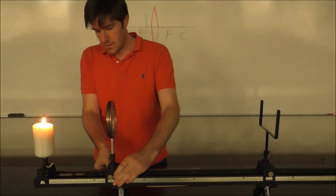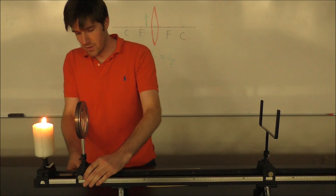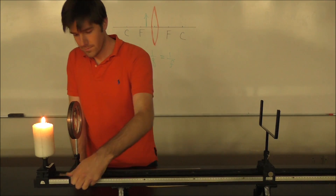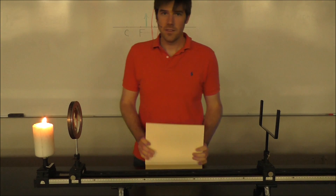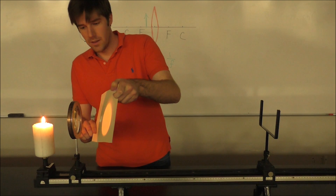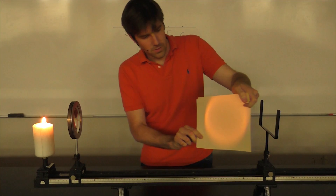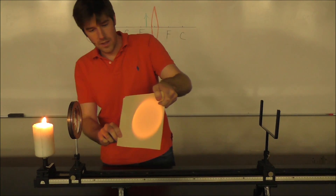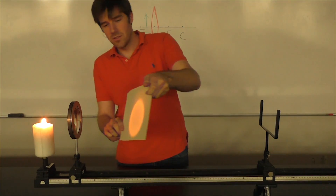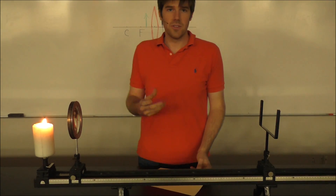I'm going to position the lens right around here, just inside 17 centimeters. Now let's look for the image. I'm going to position the screen at various positions away from the lens. You can see that there is light getting through the lens, but none of this light looks like the candle — the image isn't really formed. In fact, I could take this out to infinity and you would never see a resulting image.